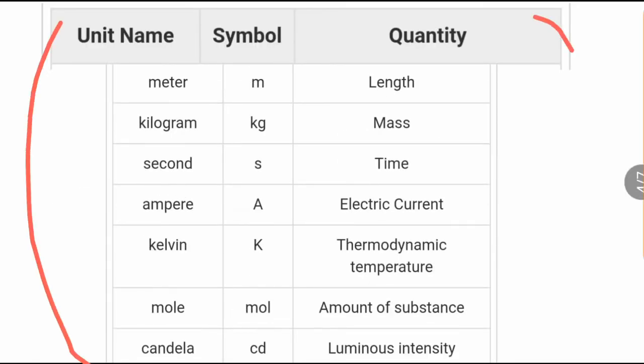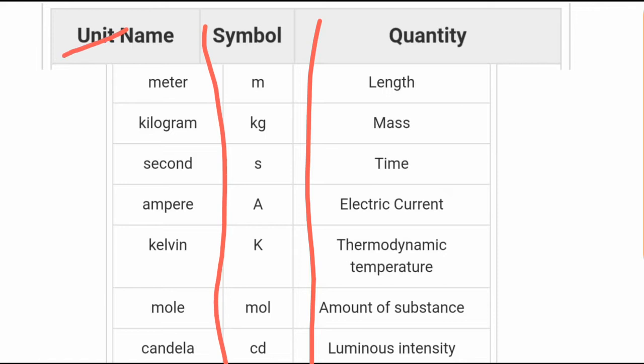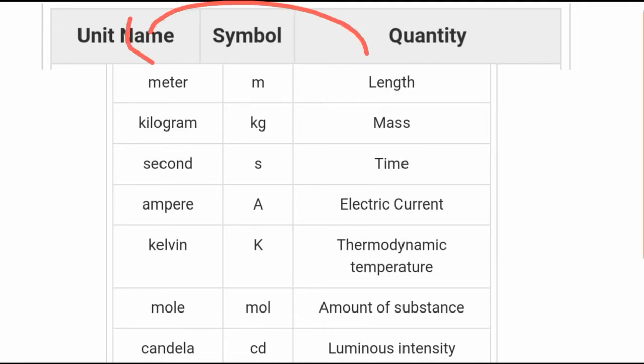Most of the time the symbol is related to the unit name, so if you learn the quantity and unit together: length is meter with symbol m, mass is kilogram kg, time is second s.